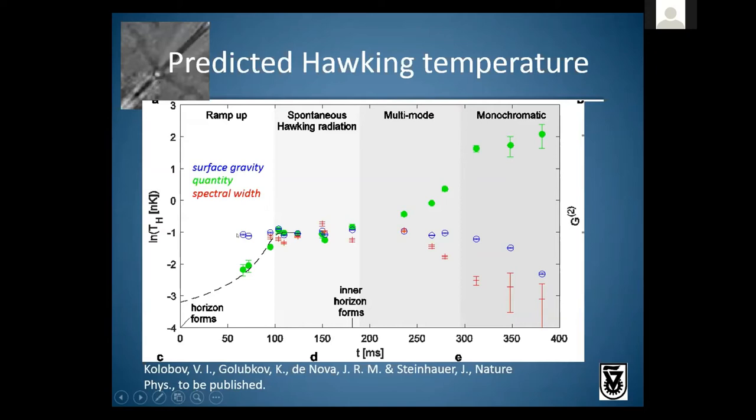The predicted Hawking temperature from the surface gravity is pretty much constant and then drops at the latest time. This is different from a real black hole where the Hawking temperature should go up as a function of time as the black hole shrinks.